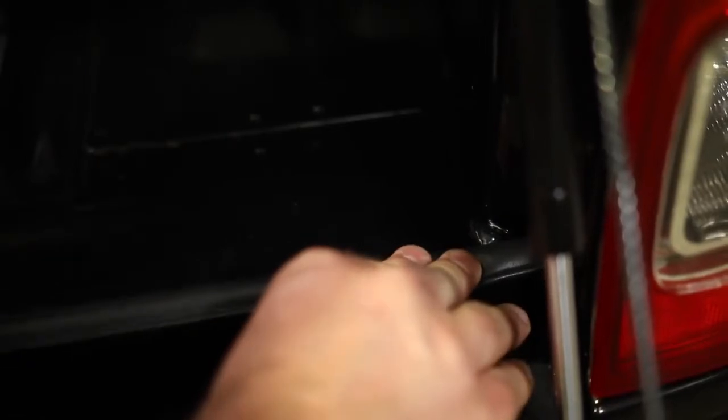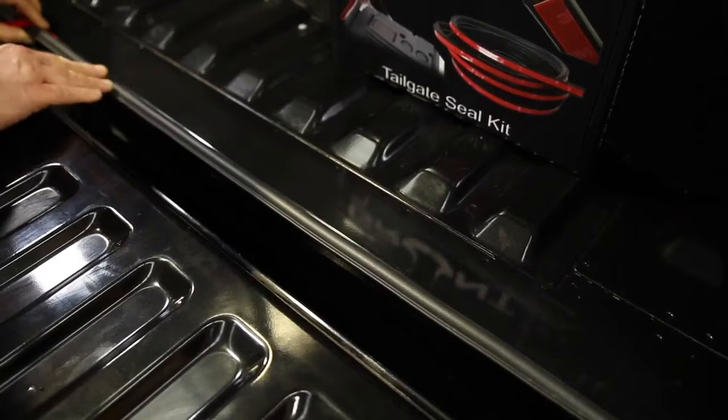Place the long bed seal across the width of the bed as shown, ensuring the lip of the seal is facing out.